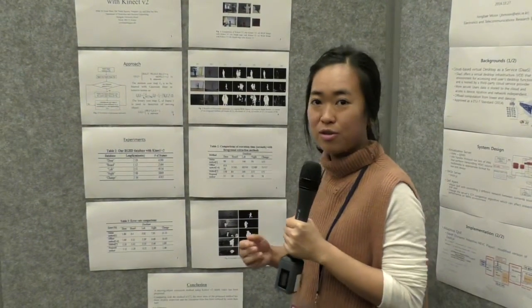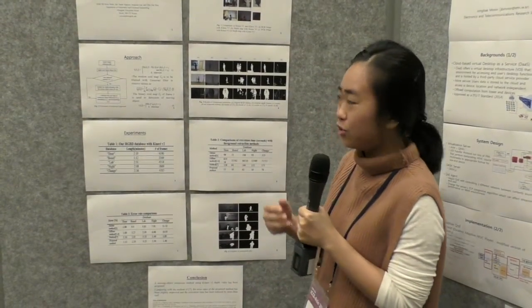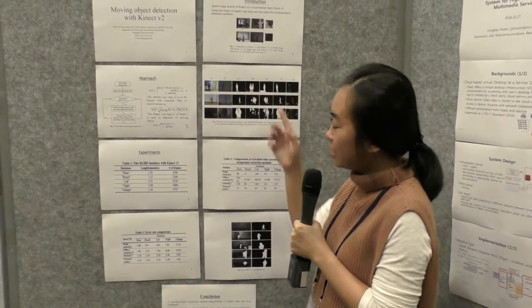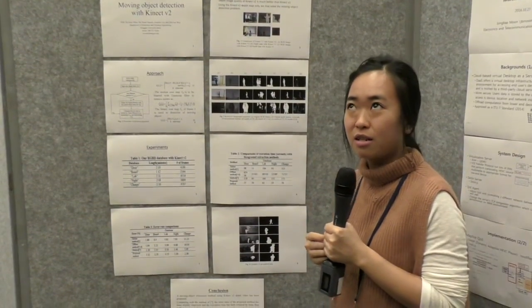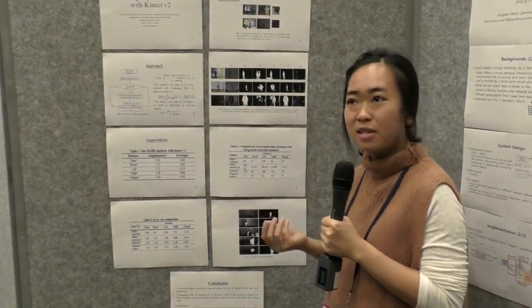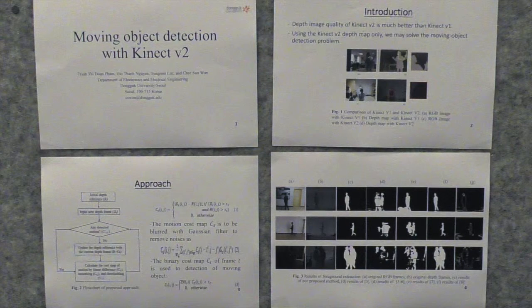I want to introduce an overall about my research topic. It's about moving object detection with Kinect V2. The motivation of our research is that most of the conventional methods use color image data only or infrared image data only. They combine between the color and depth image data but from Kinect V1. But our methods have used depth image data with Kinect V2 which produces better quality of depth images.